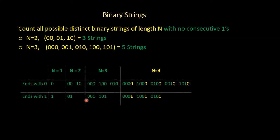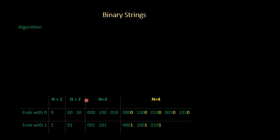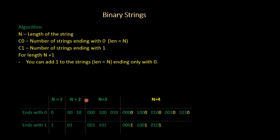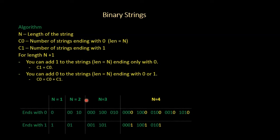Let's finalize the algorithm. Given a length n, let c0 be the number of strings that end with 0 and c1 be the number of strings that end with 1. For each step from length n to n plus 1, we append 1 to strings ending with 0, so the new c1 equals the old c0. Then we append 0 to all strings, so the new c0 equals c0 plus c1. We keep doing this from n equal to 1 up to the given input, and finally the total count c equals c0 plus c1.